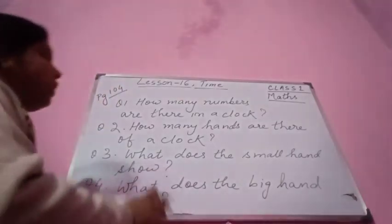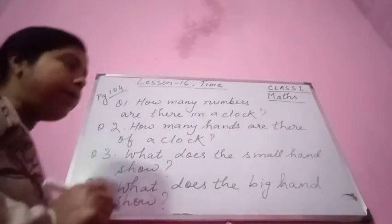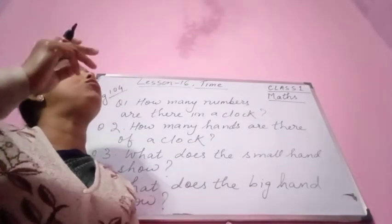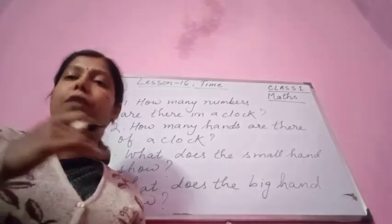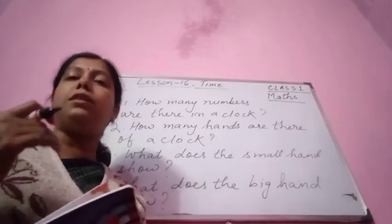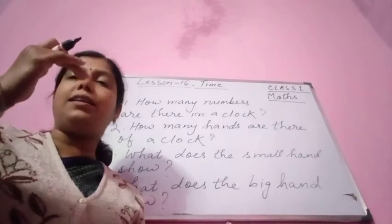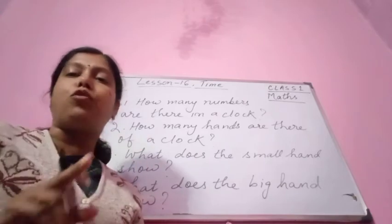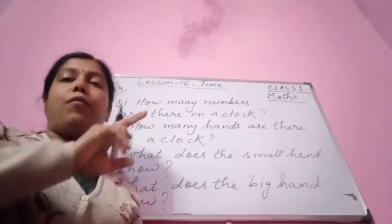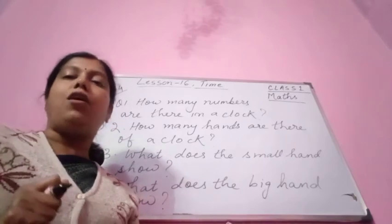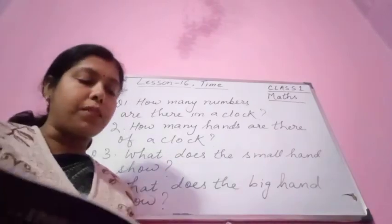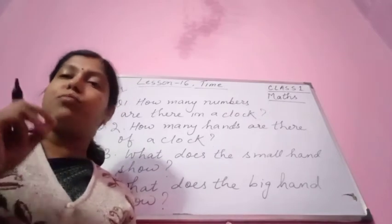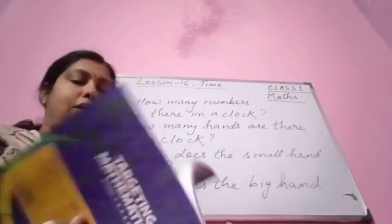What does the big hand show? The big hand shows the minutes. The big hand goes from 1 to 2 to 3 to 4. From 12 to 1 it is 5 minutes; from 12 to 2 it is 10 minutes; from 12 to 3 it is 15 minutes. The big hand is the minute hand; the small hand is the hour hand — you have to keep this in mind.